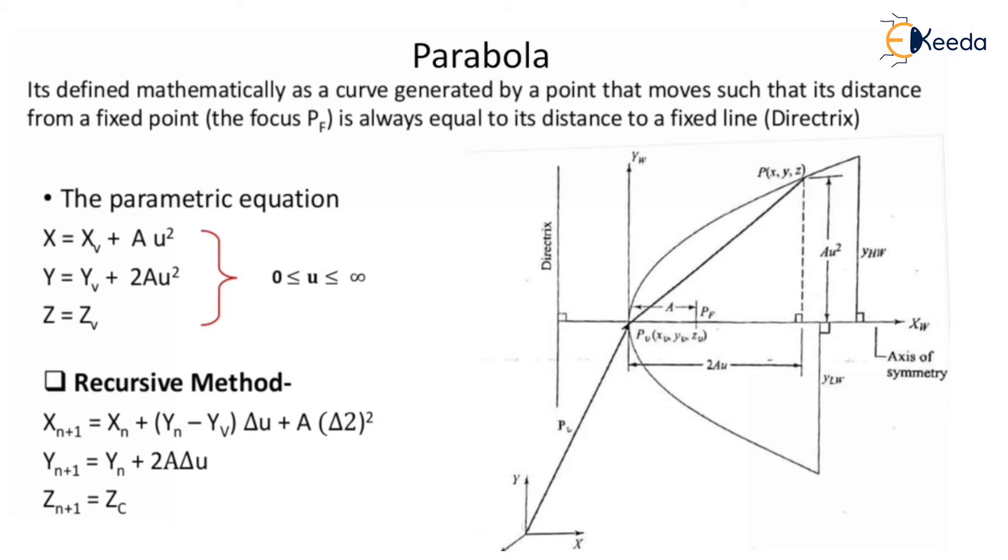You can clearly understand that 2au is the distance along the curve, and Pv equals Xv plus Yv plus Zv. So that is the initial point or fixed point of a parabola.